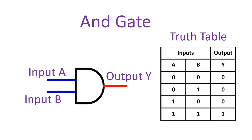The output of the AND gate is 1 if both input A and B are 1, otherwise it is 0. Looking at the truth table: input A=0, input B=0, output=0; input A=0, input B=1, output=0; input A=1, input B=0, output=0; input A=1, input B=1, output=1.